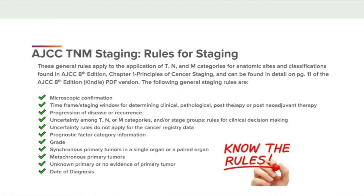Here are the following general staging rules: microscopic confirmation; time frame staging window for determining clinical, pathological, post-therapy, or post-neoadjuvant therapy staging; progression of disease or recurrence; uncertainty among T, N, or M categories and/or stage groups; rules for clinical decision-making; uncertainty rules do not apply to the cancer registry data; prognostic factor category information; grade; synchronous primary tumors in a single organ or a paired organ; metachronous primary tumors; unknown primary or no evidence of primary tumor; and date of diagnosis.